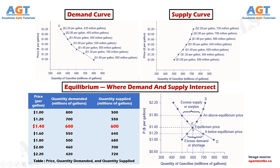The word equilibrium means balance. If a market is at its equilibrium price and quantity, it has no reason to move away from that point. However, if a market is not at equilibrium, economic pressures arise to move the market toward the equilibrium price and quantity. At any price above equilibrium, the quantity supplied exceeds the quantity demanded — we call this excess supply or a surplus. With a surplus, gasoline accumulates at gas stations, in tanker trucks, in pipelines, and at oil refineries.